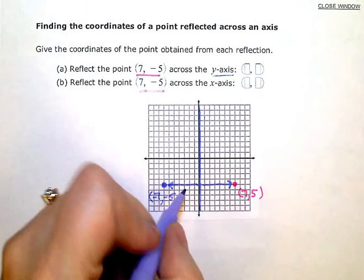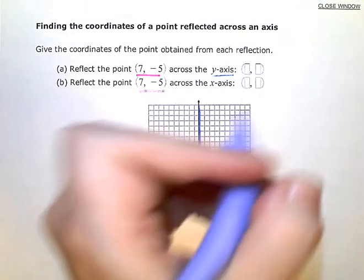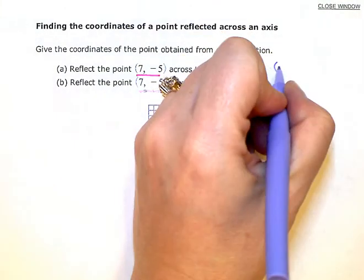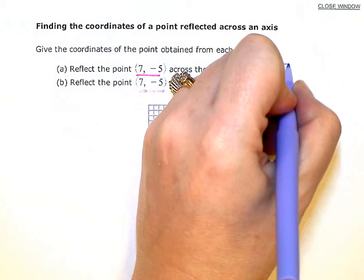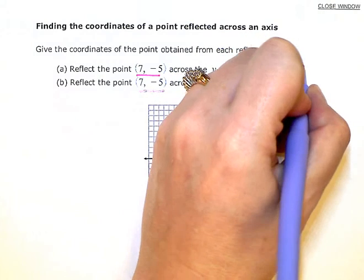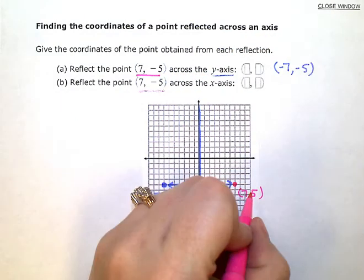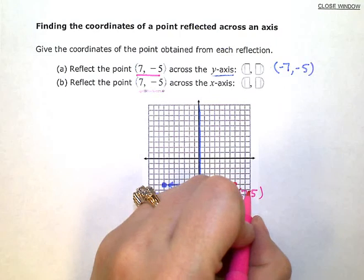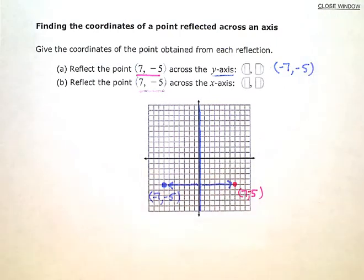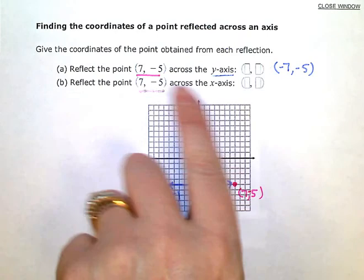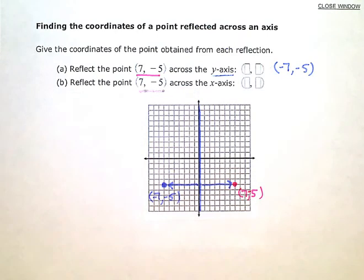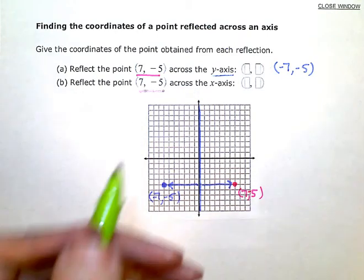So here I fill in the coordinates: negative 7, negative 5 — and I notice the 5 needs a negative sign. Now we're going to reflect the original point across the x-axis.